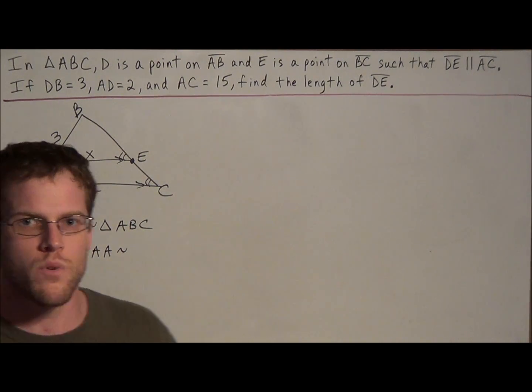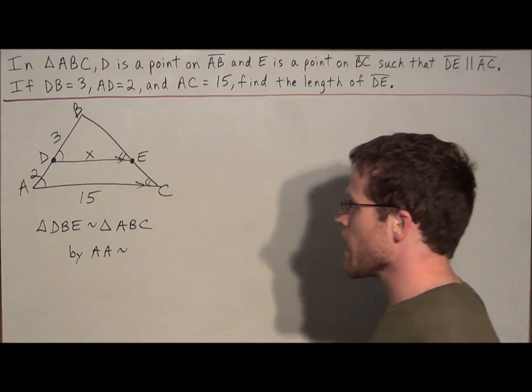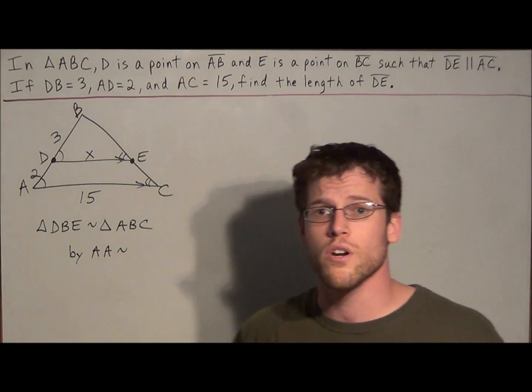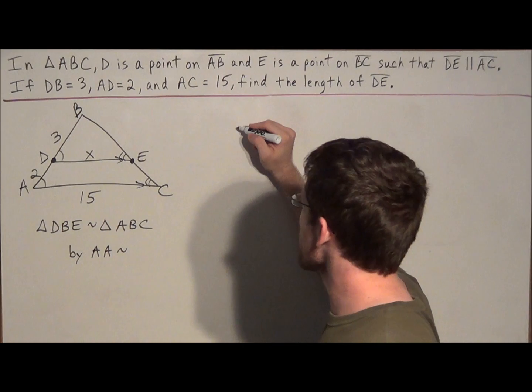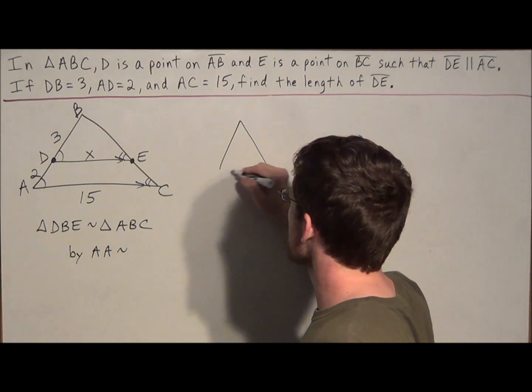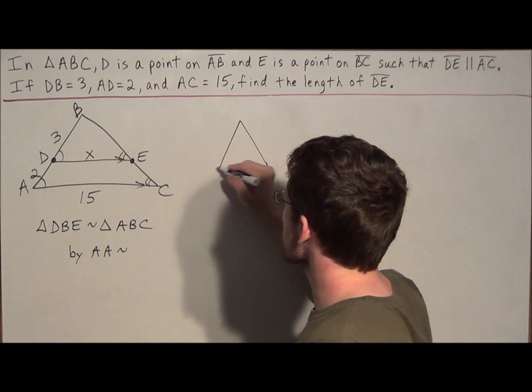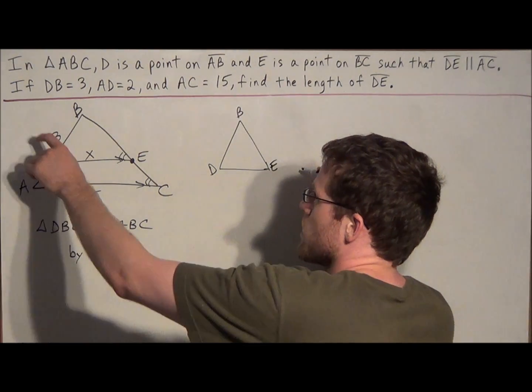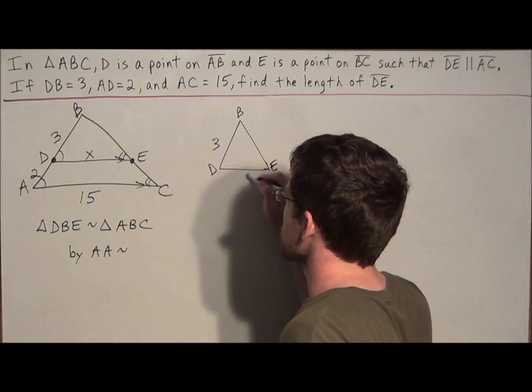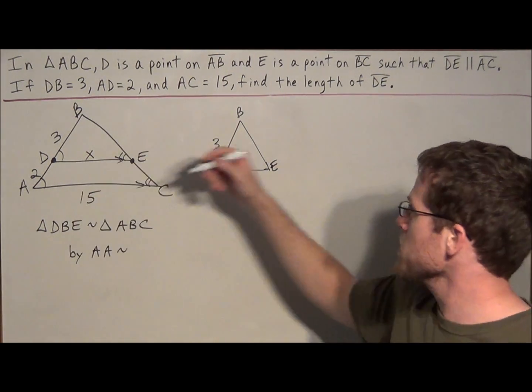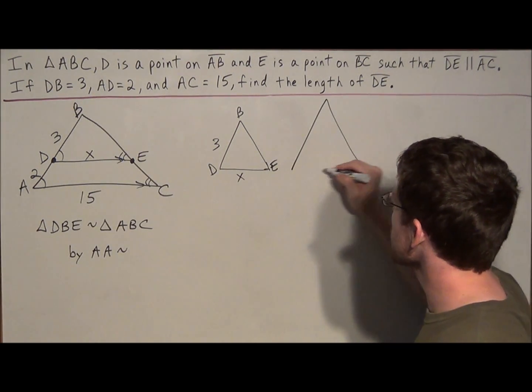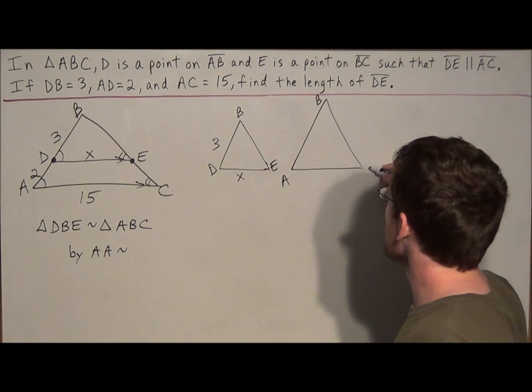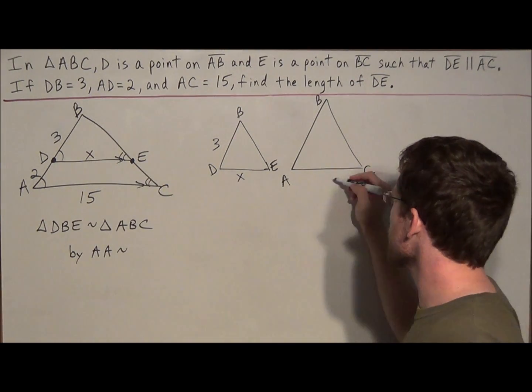We're not going to write a formal proof, we just want to solve this problem. But the strategy is, since we have these two similar triangles, we want to draw them separately. So we start off, we have triangle DBE, and we could fill in the sides that we know. We know that DB is 3, DE is X, and now the big triangle ABC, we know that side AC is 15.